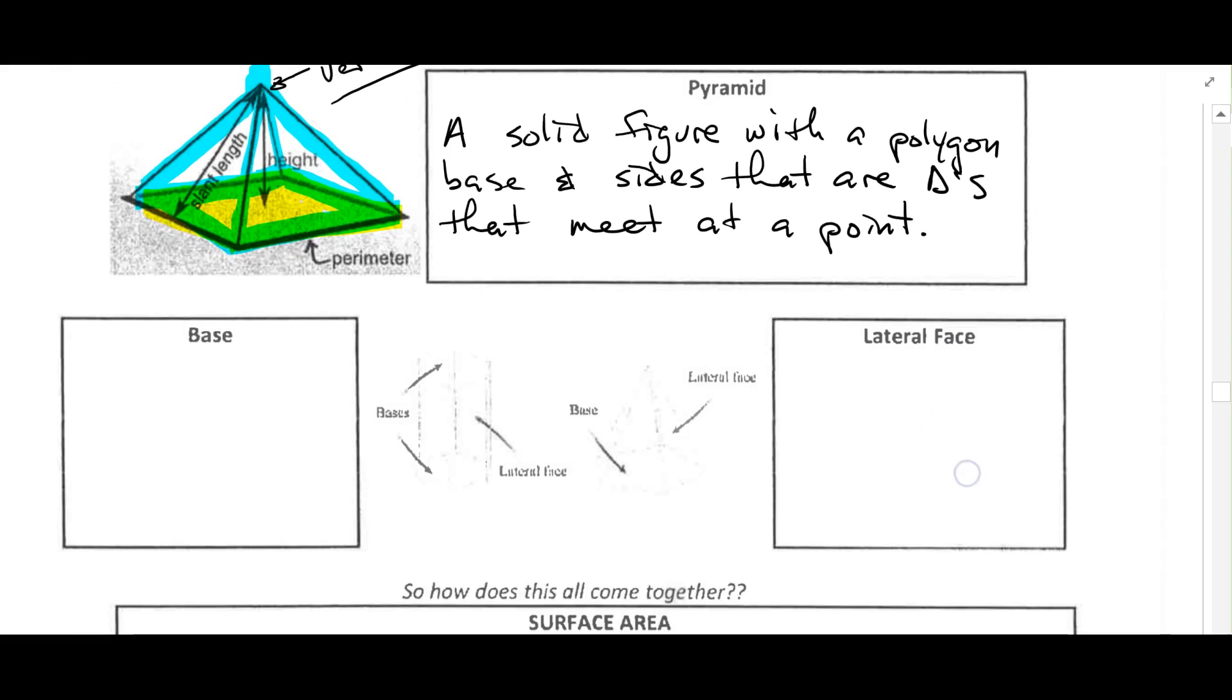We've got a base. This is the surface that a polyhedra—remember that's just a three-dimensional solid—can sometimes stand on.